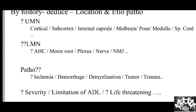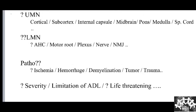For LMN lesions: anterior horn cell disease is pure motor. Motor root lesions may also be relatively pure. Plexus lesions will have multiple combinations of motor and sensory presentations. Individual peripheral nerves have specific sensory reception areas — along with motor weakness, there will be sensory loss in the nerve's distribution area. Each root has a dermatomal representation, so root involvement produces a specific combination of motor and sensory deficit.